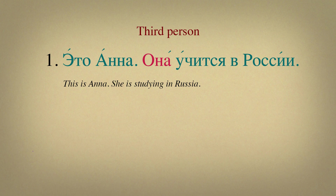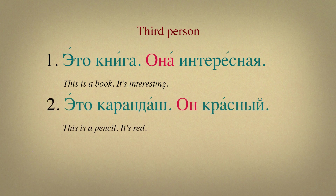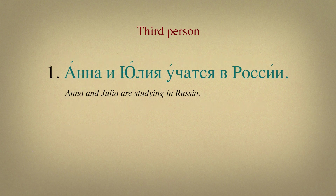Let's see examples with neutral subjects. Это книга. Книга is feminine, that's why we would use pronoun она. Она интересная. Это карандаш. Карандаш is masculine, that's why we would use он. Он красный. I will teach you in my next videos how to define the gender of neutral subjects. And here is the last example of using они: Анна и Юлия учатся в России. We can replace their names with a pronoun and the sentence will be: Они учатся в России.